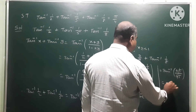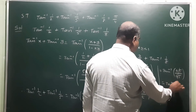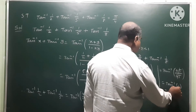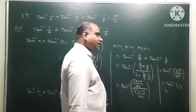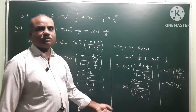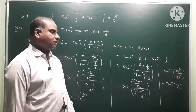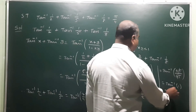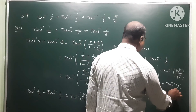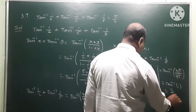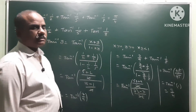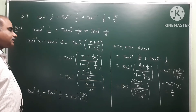Tan inverse 1 is nothing but π/4, which is 45 degrees. So that is the answer, and the LHS equals π/4, hence proved.